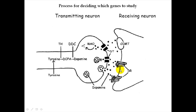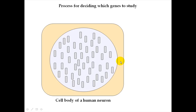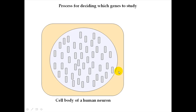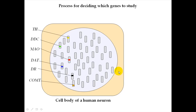Since we're talking about the genes that encode for these proteins, let's take a look at the nucleus of a human nerve cell. Because it's a somatic cell, you would expect to find 46 chromosomes within its nucleus. The genes that encode for all of these molecules are basically scattered throughout the chromosomes, and we'll use a differently colored stripe to represent each gene that encodes for those molecules involved in the dopamine pathway.